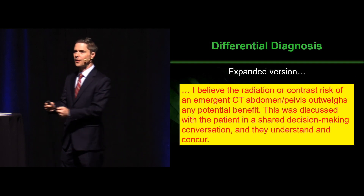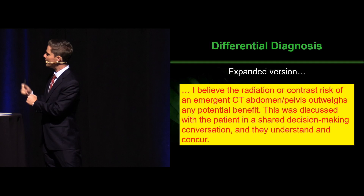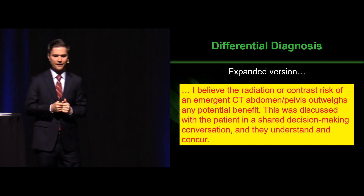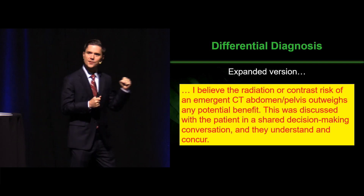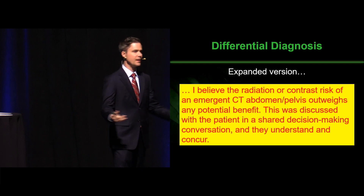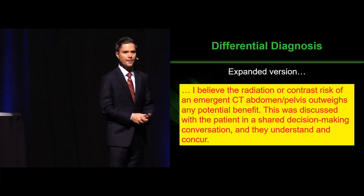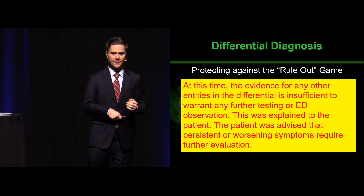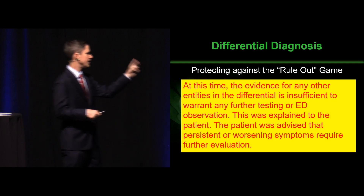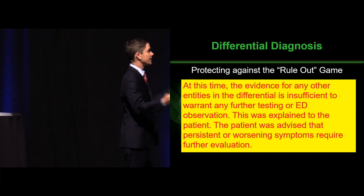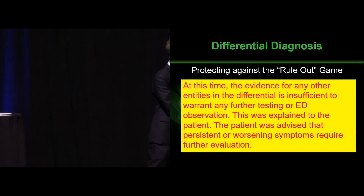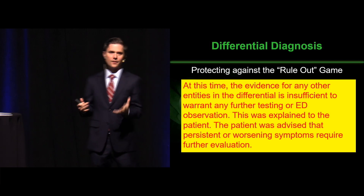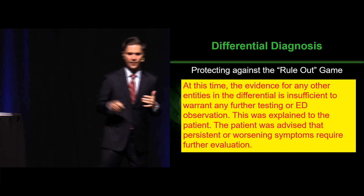You can get a little better by talking about how the risks outweigh the benefits — radiation and contrast risk that outweighs the potential benefit. And then even better, you start talking about shared decision-making: this was explained to the patient and they agreed. Even better, getting into some data — at this time, the evidence for any other entities in the differential is insufficient to warrant further testing or ED observation. This is the catch-all explaining why it's reasonable you're not going further.